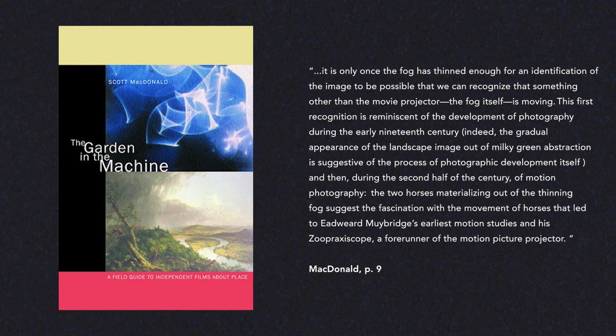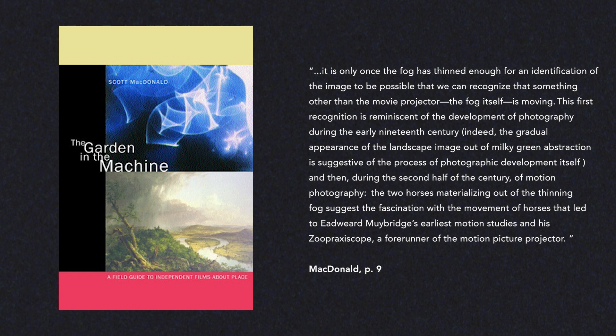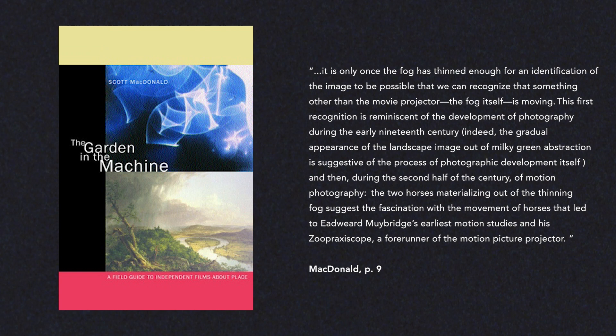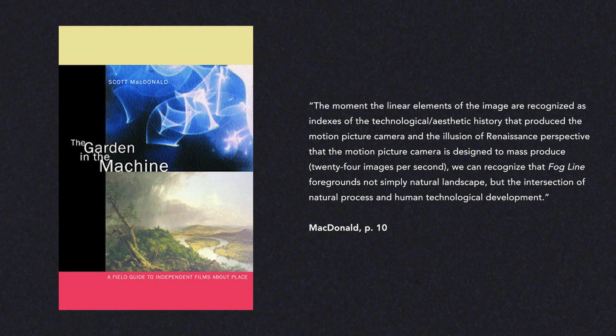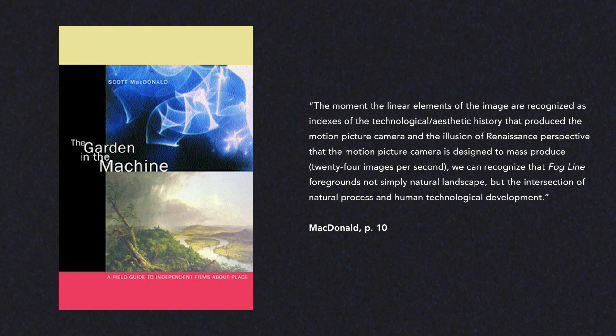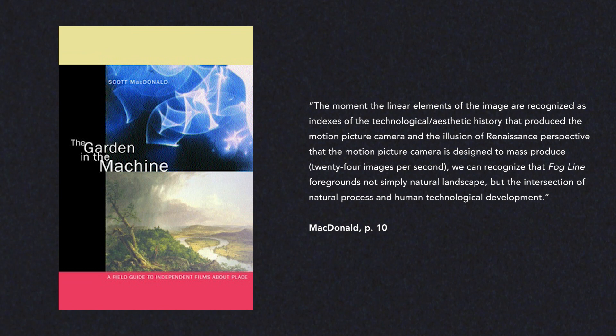McDonald continues: "The moment the linear elements of the image are recognized as indexes of the technological aesthetic history that produced the motion picture camera and the illusion of Renaissance perspective that the motion picture camera is designed to mass produce — 24 images per second — we can recognize that Fogline foregrounds not simply natural landscape, but the intersection of natural process and human technological development."